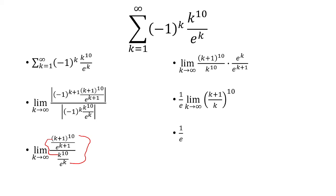And so 1 times 1 over e is 1 over e. Keep in mind, we did the ratio test. And because 1 over e is less than 1, we say that this series converges.